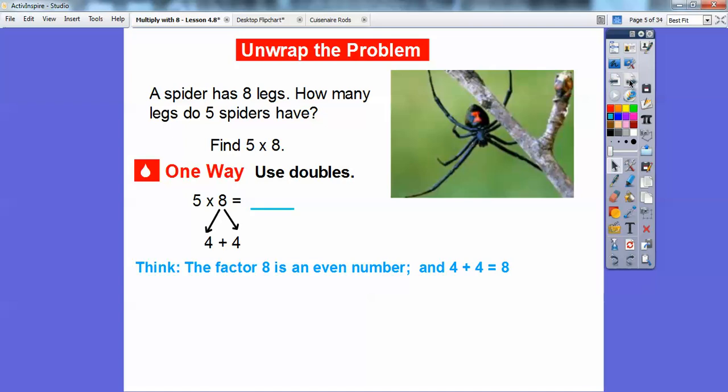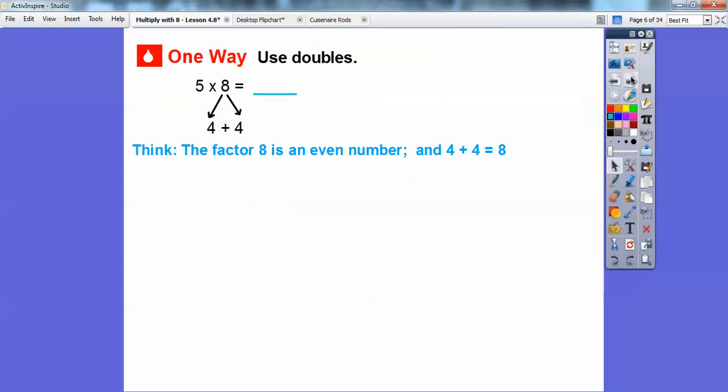Here's one way we can do this: we can use doubles. Eight is an even number, so we can break eight down into halves. Half of eight is four, so 8 = 4 + 4. Let me move that spider out of the way. So four plus four, then we can multiply 5 × 4. Five times four is twenty.